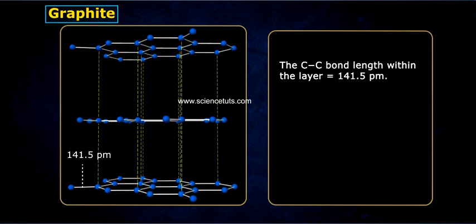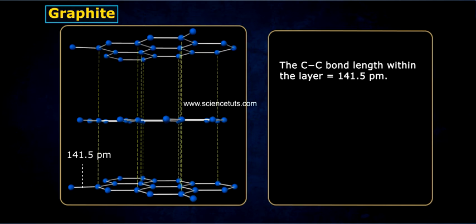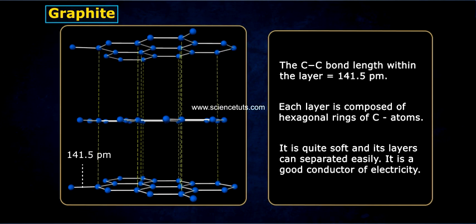The carbon-carbon bond length within the layer is equal to 141.5 pm. Each layer is composed of hexagonal rings of C atoms. It is quite soft and its layers can be separated easily. It is a good conductor of electricity.